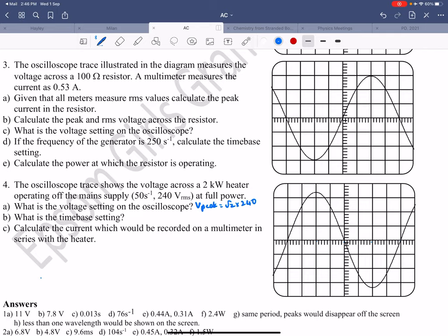So root 2 times 240 gives you, so I'm going to put that in my calculator, 240 times square root 2 and I get about 340. So I get 340 volts and that's your peak voltage.